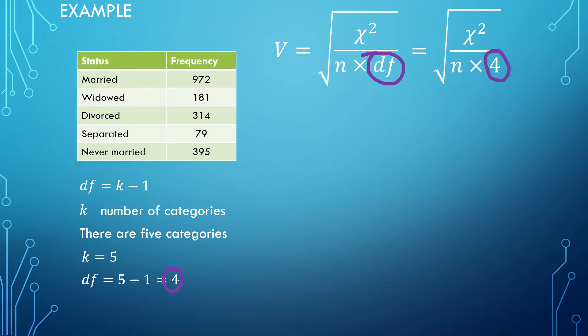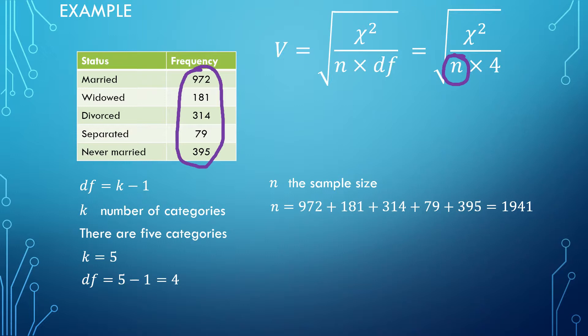The next thing is this n, which is the sample size. The sample size in this case is the sum of all of these, so we get 972 plus 181 etc., which in total is 1941. We can substitute that for n, and as you can see that is now entered in here.